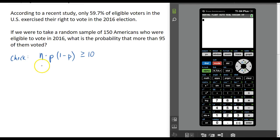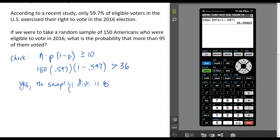In this example, my n is 150, my p is 0.597, and then I will multiply by 1 minus 0.597. So I type this in and it looks like we get a little more than 36. That's definitely more than 10, which means we are good. So yes, the sampling distribution is approximately normal.